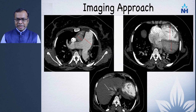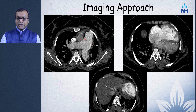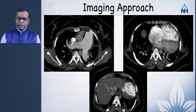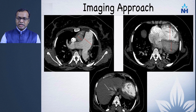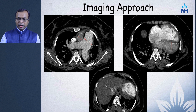On CT with suspected pulmonary hypertension, first look at the size of the pulmonary artery — larger than 2.9 cm, or the main pulmonary artery being larger than the aorta, is suspicious. Look at the right ventricle relative to the left ventricle — the RV should not be larger and the interventricular septum should not be straight. Reflux of contrast into the hepatic veins suggests tricuspid regurgitation, another feature of pulmonary hypertension.